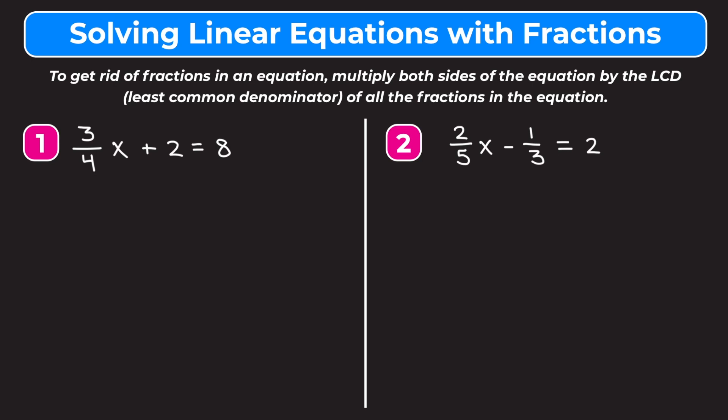So let's jump into example one. We have 3/4x plus 2 equals 8. We only have one fraction in this equation, 3/4, so we just want to multiply everything by that denominator. If we have more than one fraction we're going to multiply by the least common denominator, which I'll show you in number two, but because we only have one fraction we just want to multiply both sides of our equation by the denominator.